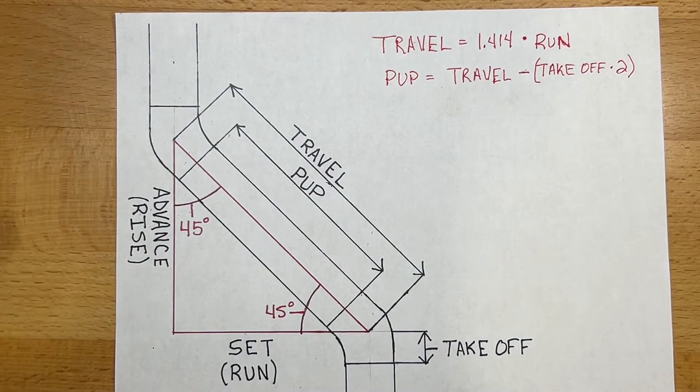If you want to do 22 and a half, 30, or 60 degree offsets, I'll give you the formulas to show you how to do that. But when we're talking about a 45-degree offset, it's a special right triangle.